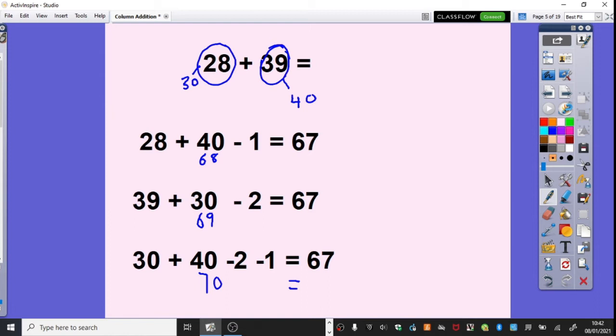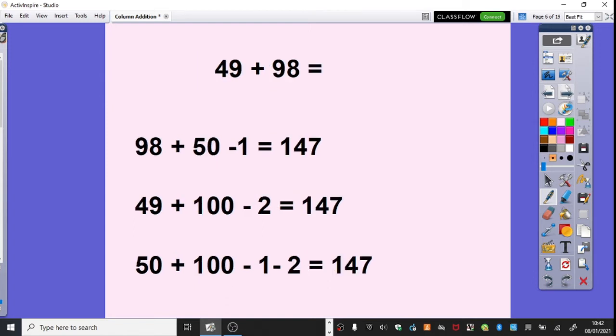So that's just another kind of calculation, a different way you can play around with the numbers. And another example here, obviously, we've got 49 is very close to 50. So we've used our strategy there of adding 50 and minusing 1, the 1 too many.